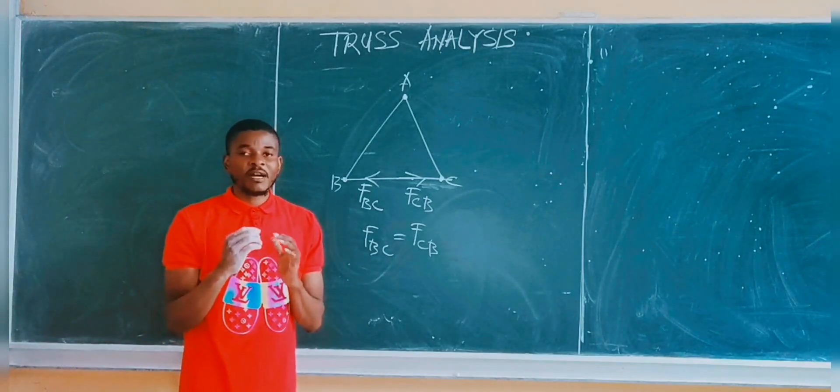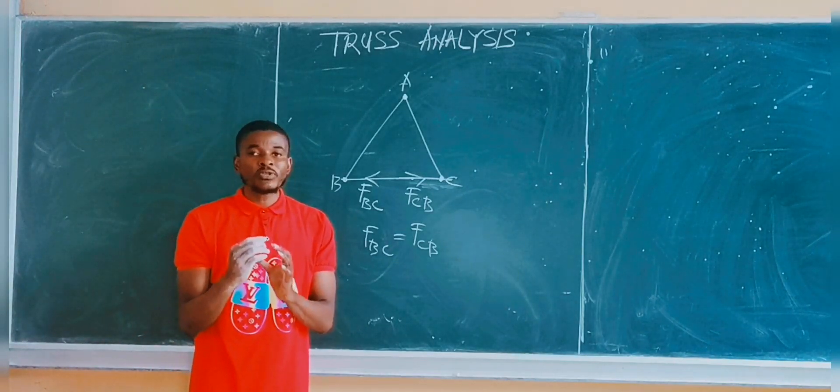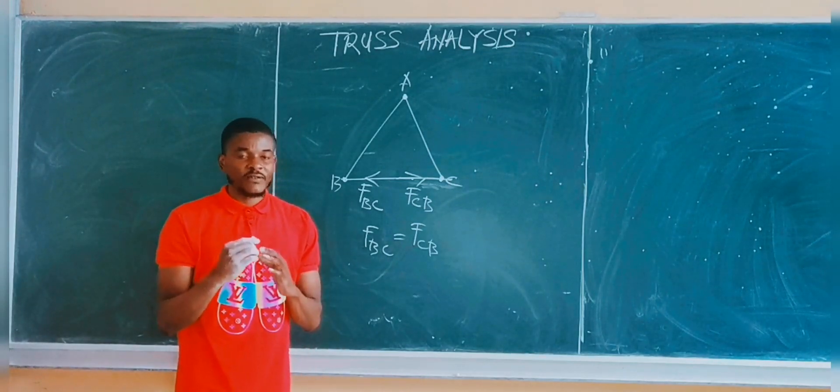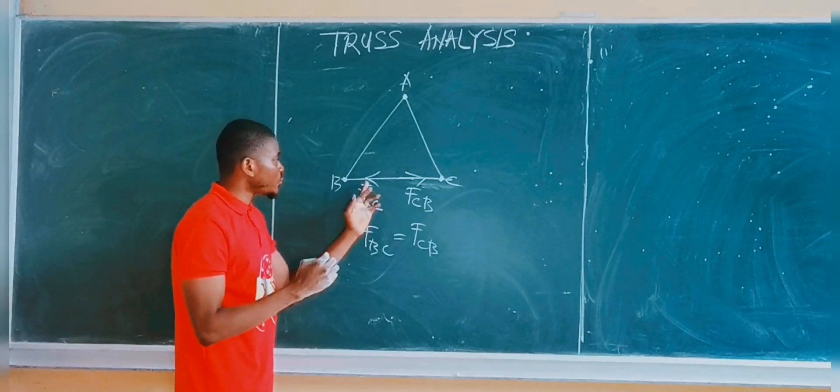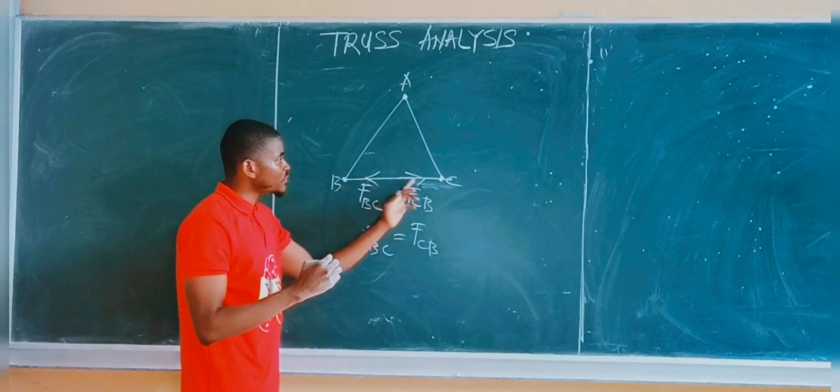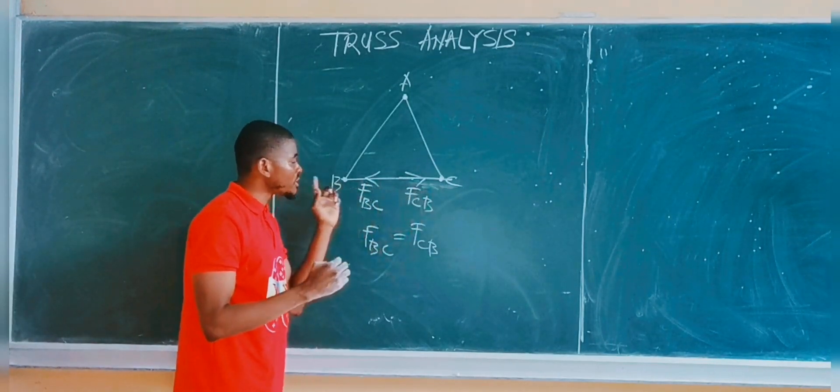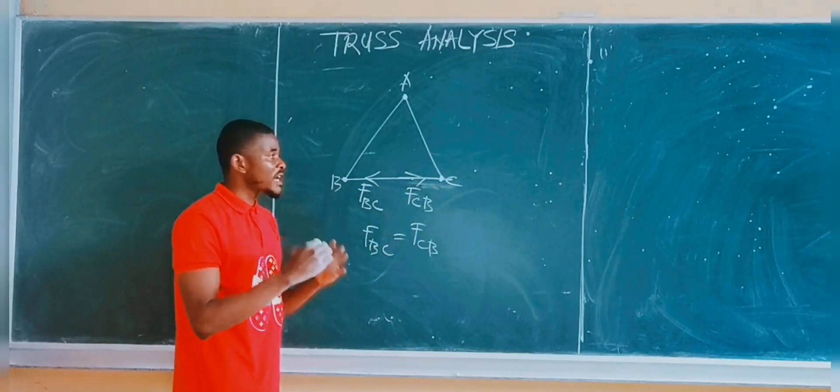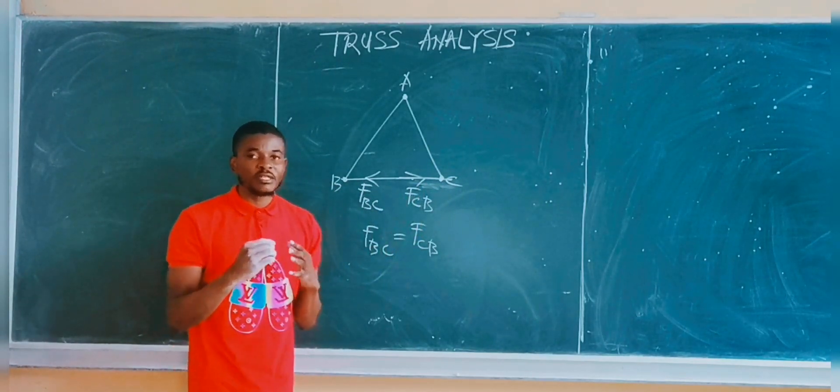So each member of the truss system carries two equal but opposite in direction forces. The force magnitude is the same but the direction is different. This force is moving towards joint B and this force is also moving towards joint C. Therefore, the forces are the same but they are in opposite directions.